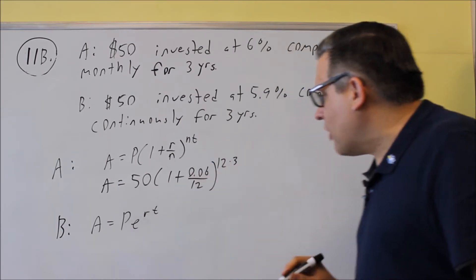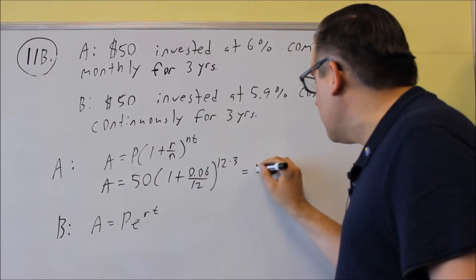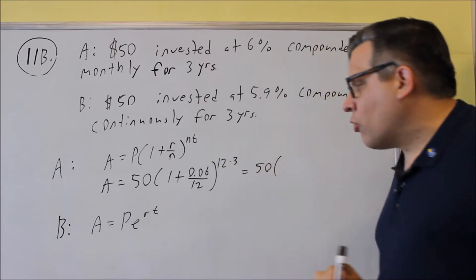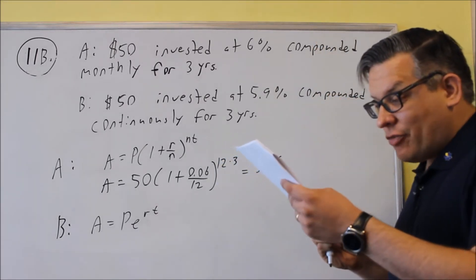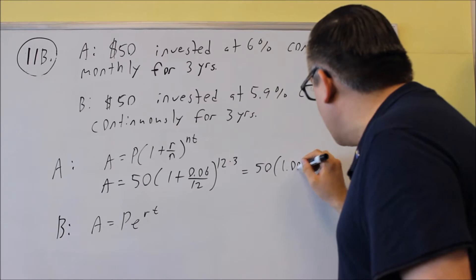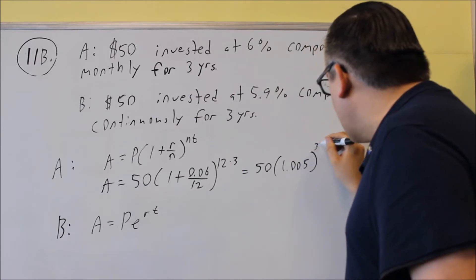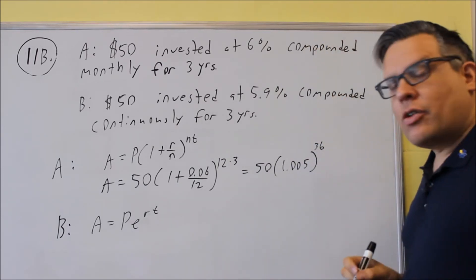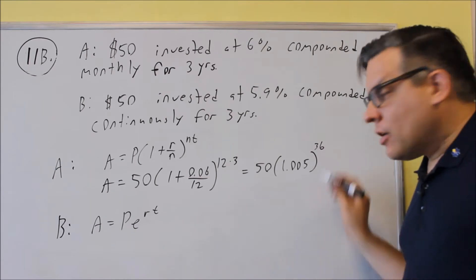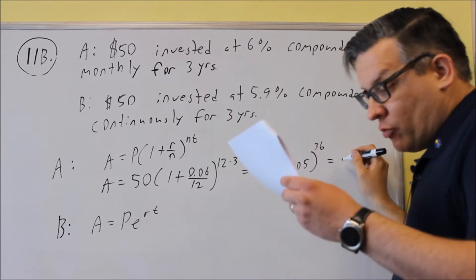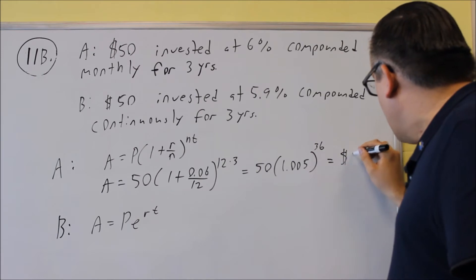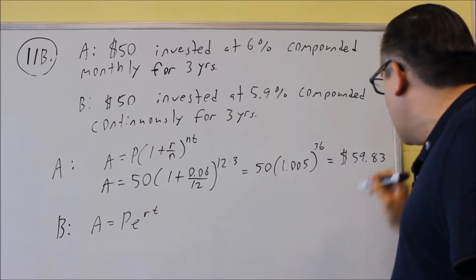So this is how we set up that first one. We're going to first do the inside part, so 1 plus 0.06 over 12, and if you do that, you're going to get 1.005, and that's going to be raised to the 36th power. We're going to put that into our calculator, and what results is $59.83.